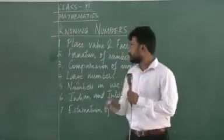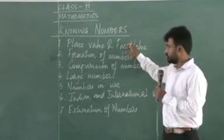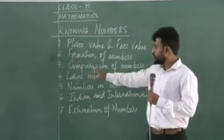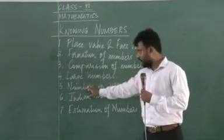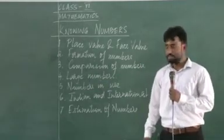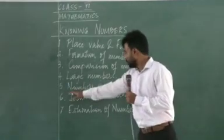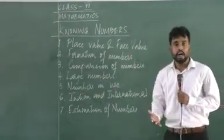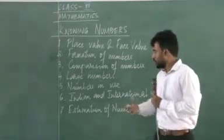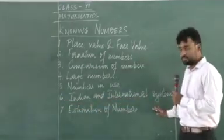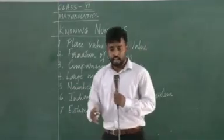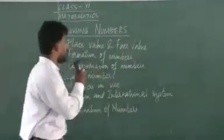There are seven topics we will discuss. First is place value and face value of numbers. The second is formation of numbers — how to form numbers. The third is comparison of numbers. Fourth, we have large numbers; we'll learn about the larger units of numbers. Number five, we have numbers in use, where we will use how to measure numbers with their units and how to compare them. Then sixth, we will learn the Indian and international system. And seventh, we'll learn how to estimate numbers. So first of all, let us come to place value and face value.